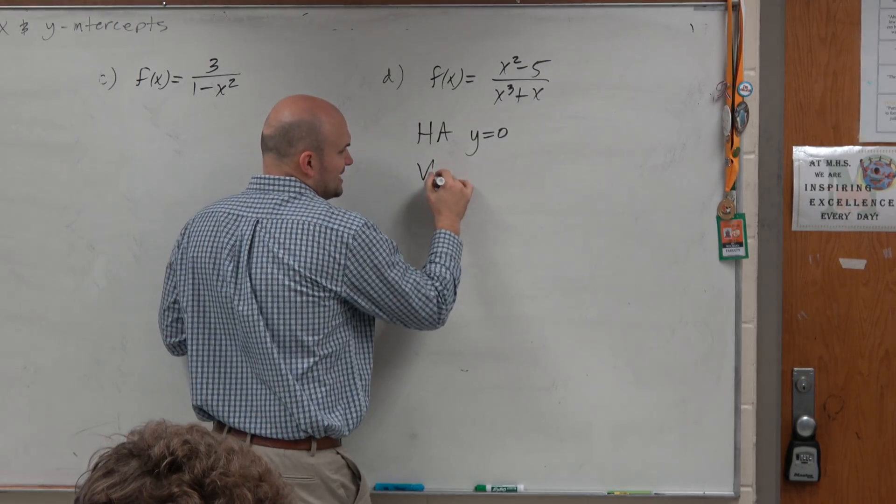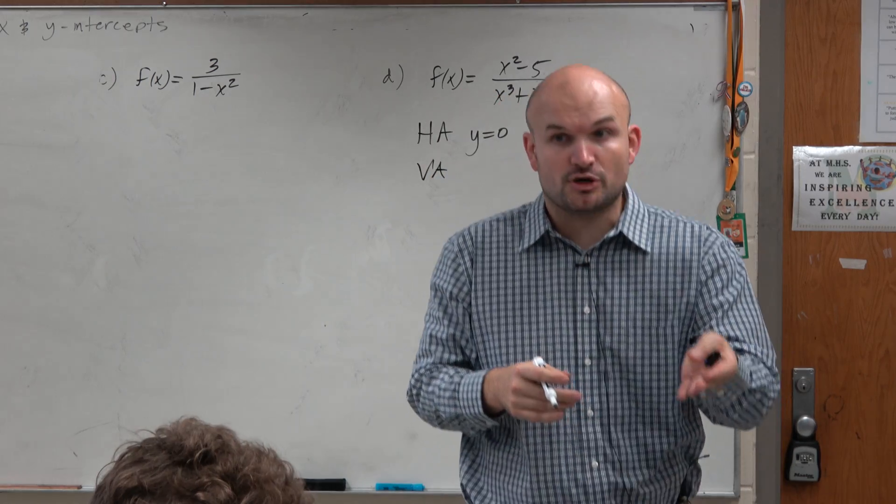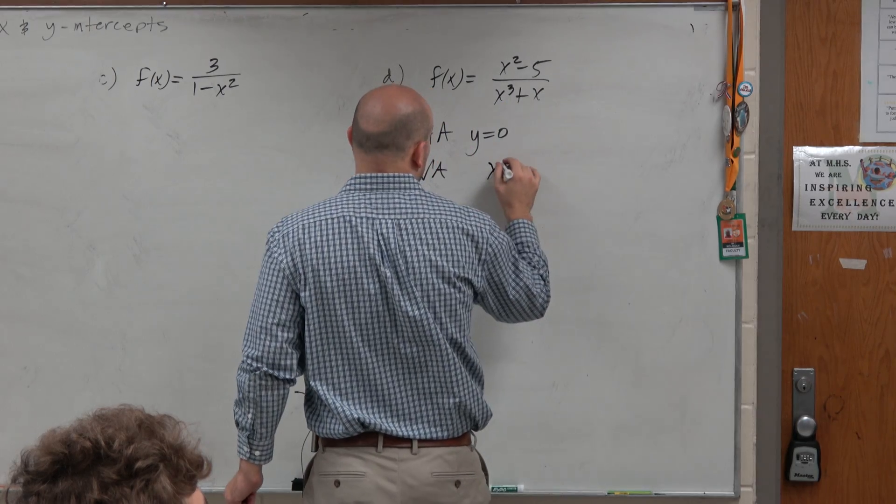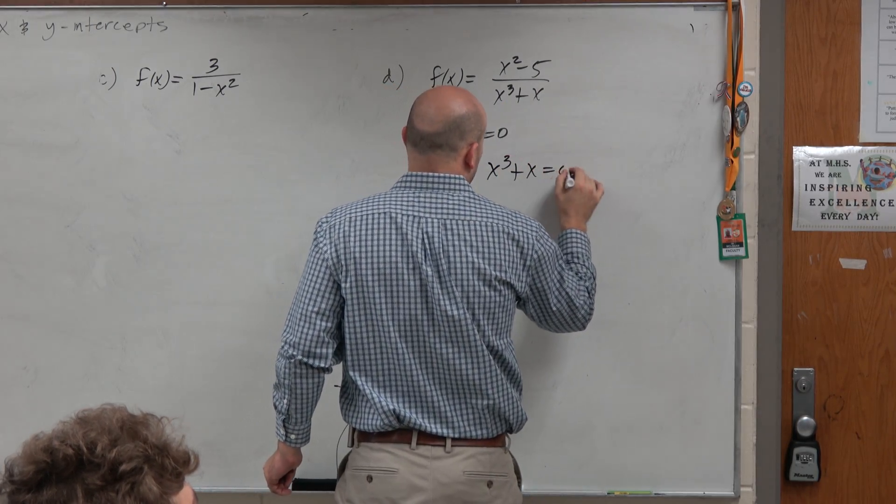The next one, vertical asymptote. Well, we learned in chapter one, the vertical asymptote is when the denominator is equal to 0. So we're going to set the denominator equal to 0. However, that wasn't all the case.